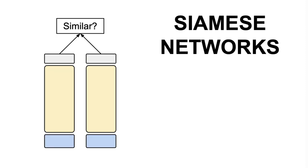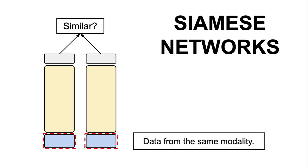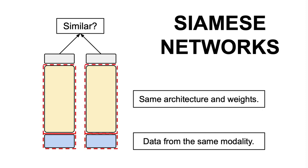Moving on to Siamese networks, we encounter a model that has a distinct characteristic compared to the two towers architecture, which is that both networks operate on the same modality and share the same weights. This architecture is particularly well suited for tasks involving similarity or dissimilarity comparisons within a single modality.